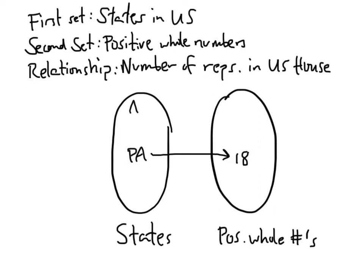Let's do a couple other states. Alaska (AK) has one representative in the United States House, so we draw an arrow from Alaska to one. North Dakota (ND) also only has one representative, so we also draw an arrow from North Dakota to the number one. Now we might be concerned, because our definition said everything in the first set had to correspond to exactly one thing in the second. But the rule means everything in the first bubble needs exactly one arrow coming out of it — the fact that these two arrows happen to point to the same place is okay. This is still a function.